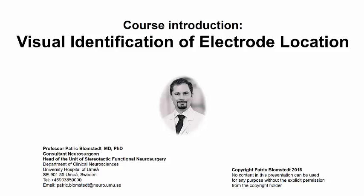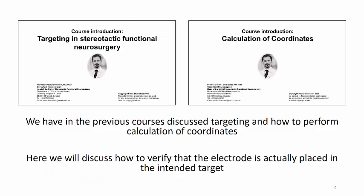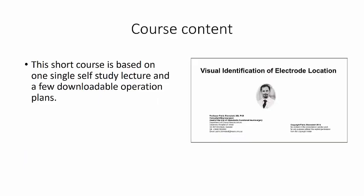Dear colleague, welcome to this course in visual identification of electrode location. We have in the previous courses discussed targeting and how to perform calculation of coordinates. In the present course we will discuss how to verify that the electrode is actually placed in the intended target. This is a very short course, based on one single self-study lecture and a few downloadable operation plans.